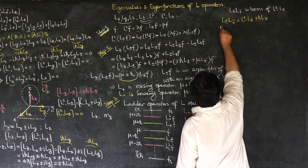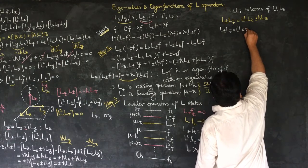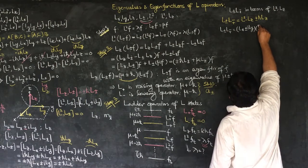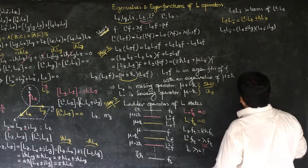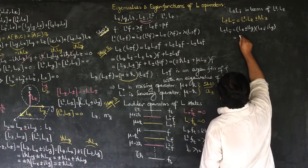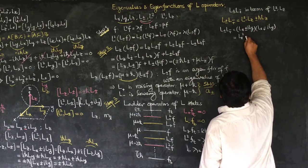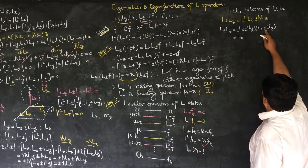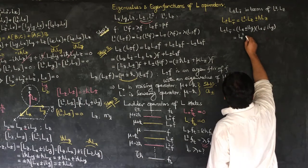Let's start the derivation. L+∓L-± equals (Lx ± iLy)(Lx ∓ iLy). Doing the direct multiplication gives us Lx², and the cross terms always give a minus sign — when one is plus the other is minus — so with i² giving another minus, we get plus Ly².